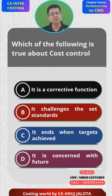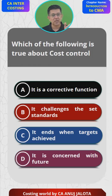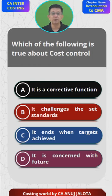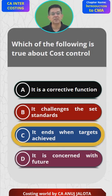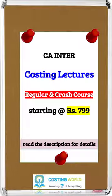So, which of the following is true about cost control? Option A — it is a corrective function — no, it is a preventive function. Option B — it challenges the set standards — no, it says the standards are correct and we control cost within them. Option C — it ends when targets are achieved — yes, this is true. Option D — it is concerned with the future — no, it is concerned with the past and present. So the correct answer is C. Thank you, see you all next time, bye.